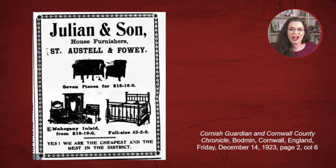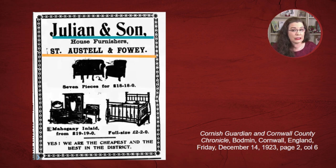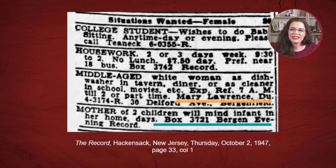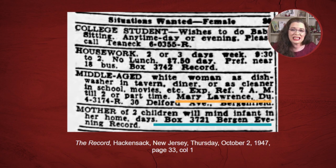If your ancestor either owned or worked for the business Julianne and Son, finding this ad in the newspaper can tell you what this company sold. You can see that they claim they are the best and the cheapest in the district. Now, in this classified ad, you can see that Mary Lawrence wants a middle-aged woman to be a dishwasher in her tavern. Notice the contact information for Mary. If you happen to discover that your ancestor worked for Mary Lawrence, then you can look at ads to see what qualifications Mary desired when trying to hire your relative.